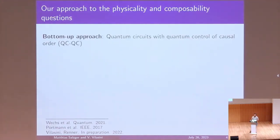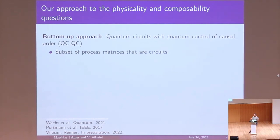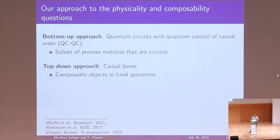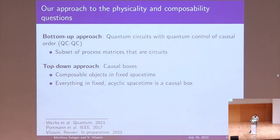To address this, we looked at two more frameworks. The first is called quantum circuits with quantum control of causal order, or QCQCs. This is a bottom-up approach that takes the intuition of circuits and tries to generalize it to the setting of indefinite causal order. The other is called causal boxes — a top-down approach that assumes boxes living in spacetime that can be composed in arbitrary ways. It turns out that everything in a fixed acyclic spacetime is essentially a causal box.